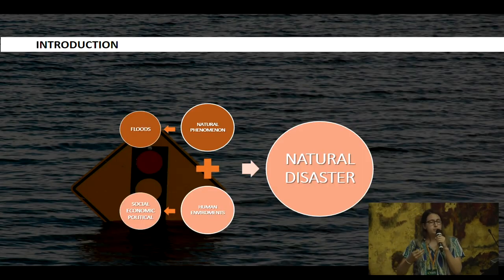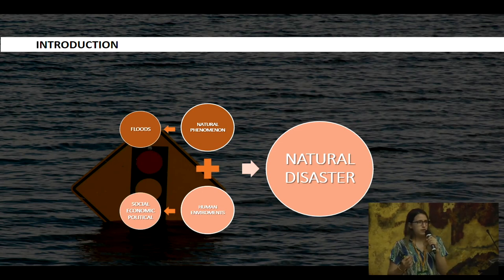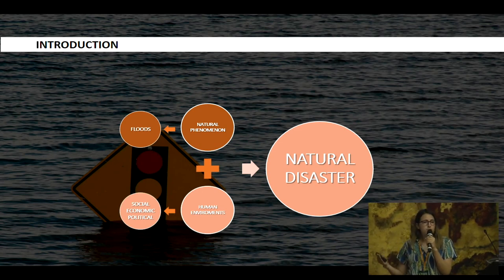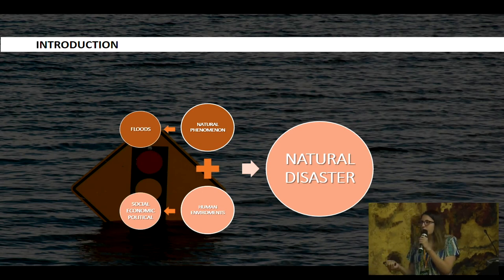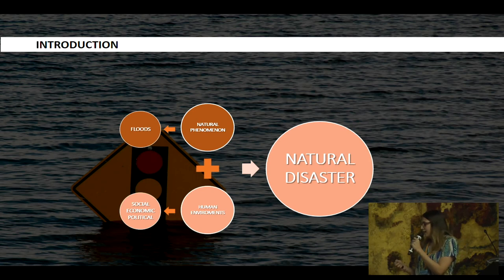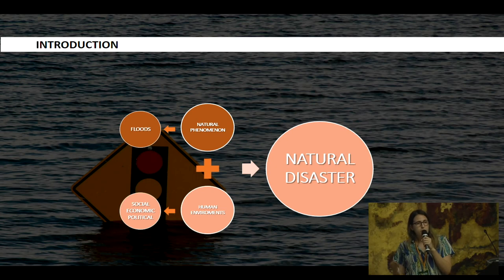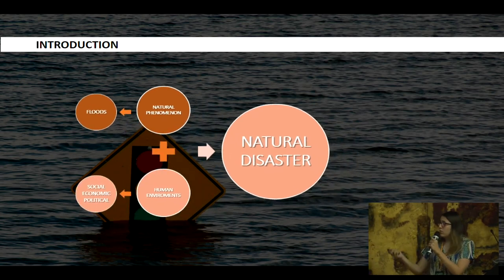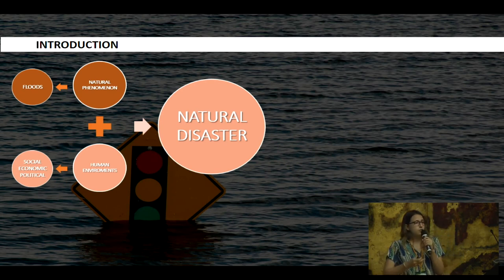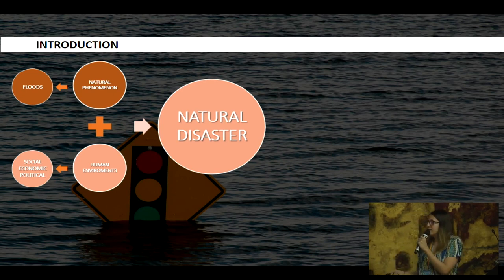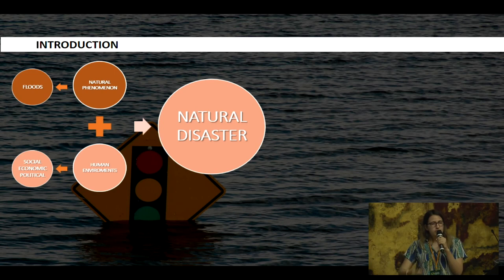From the human perspective, natural hazards are geophysical events that endanger lives of different people around the world. But this danger is not only a result of the geophysical events — it is also a result of different human environments, like social, economic, and political environments. A natural hazard becomes a natural disaster depending on both components. One of the most significant geophysical events resulting in natural disasters are floods, and exposure to them is increasing worldwide due to climate change and population growth.